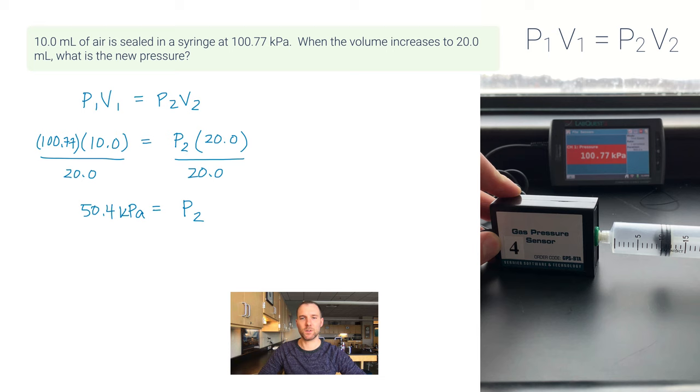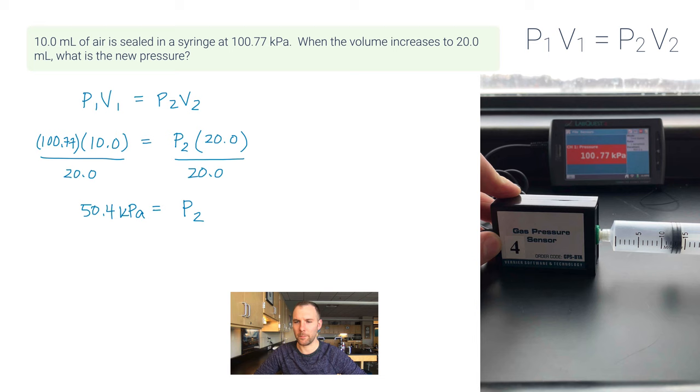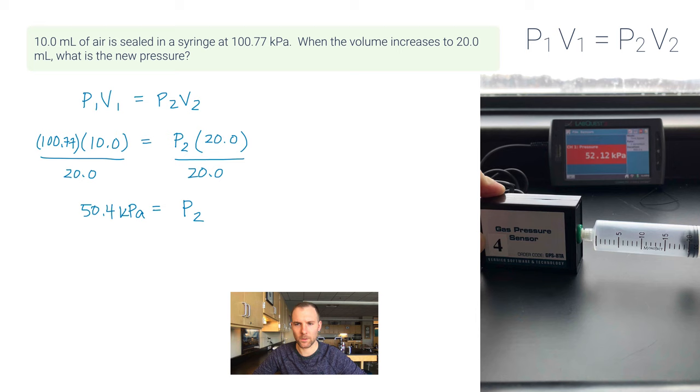So let's see what happens in real life. I'm going to take this syringe here, pull it back to the 20 line, and if we're looking at the screen in the background there, it looks like 52.1—52.1, pretty close. I mean, it's within a reasonable margin of error.